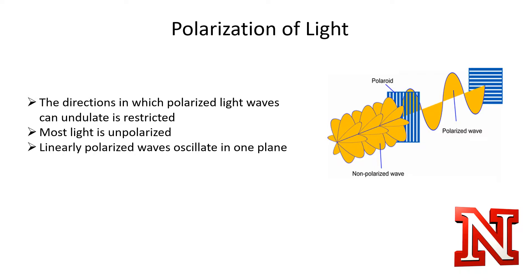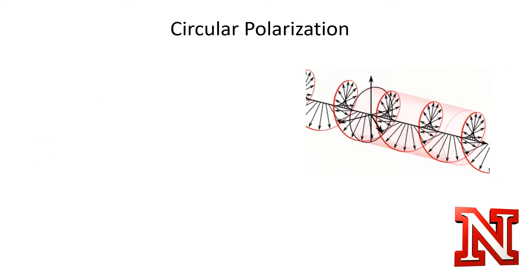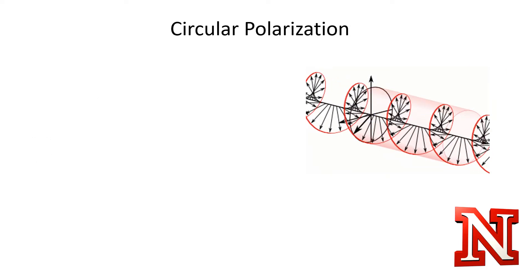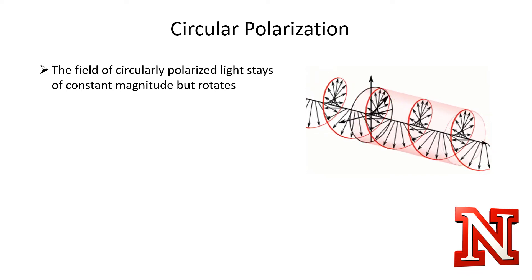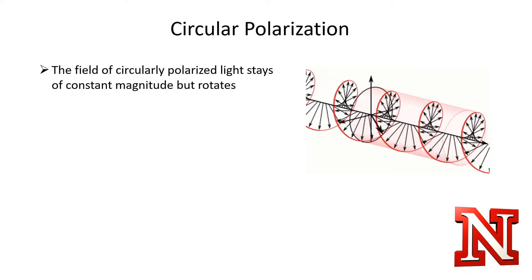Unpolarized light can be passed through material with long strands of atoms lined up to act like fences to block all light except that in the same plane, making the light linearly polarized. Another type of polarization is circular polarization, where the field has a constant value but rotates around, forming a circle as the wave propagates.